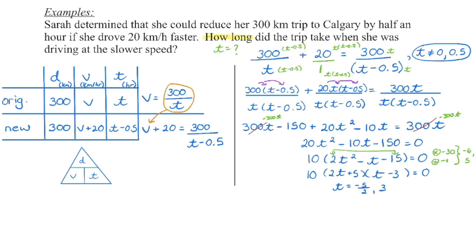We check the solutions against the restrictions — those two values are fine. Now also consider the context: this is time, and we cannot have negative time. So that solution is not valid, which leaves us with one solution: T equals 3. We substitute that back in and check that the left side of the equation equals the right side — it does.